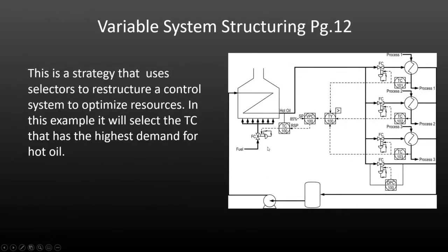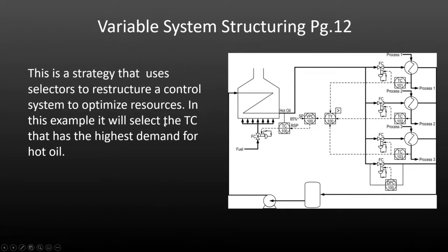The last application is variable system structuring — a strategy that uses selectors to restructure a control system in order to optimize resources. In this case, the resource is hot oil and how it's applied to exchangers based on demand. The selector here is a high selector, allocating hot oil to whichever exchanger has the highest demand based on the process variable of temperature. The most common applications are probably the safety override versions and the redundant ones — you'll see a lot of redundancy especially in larger petrochemical facilities.